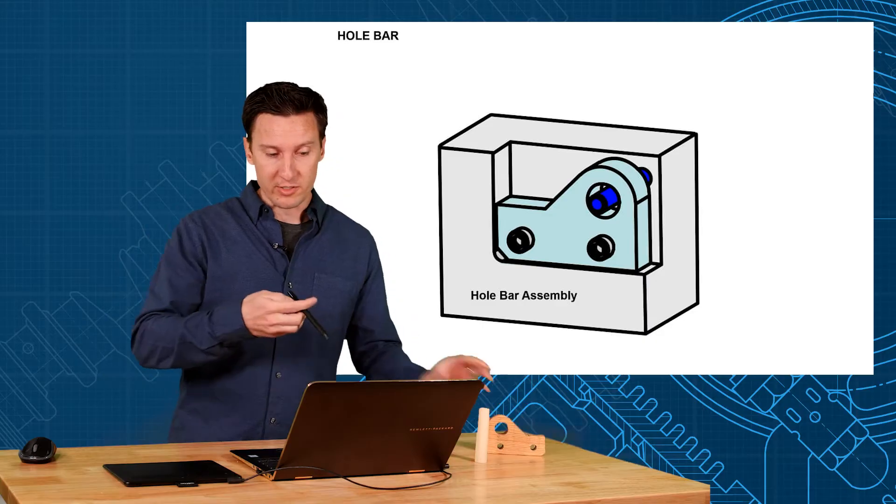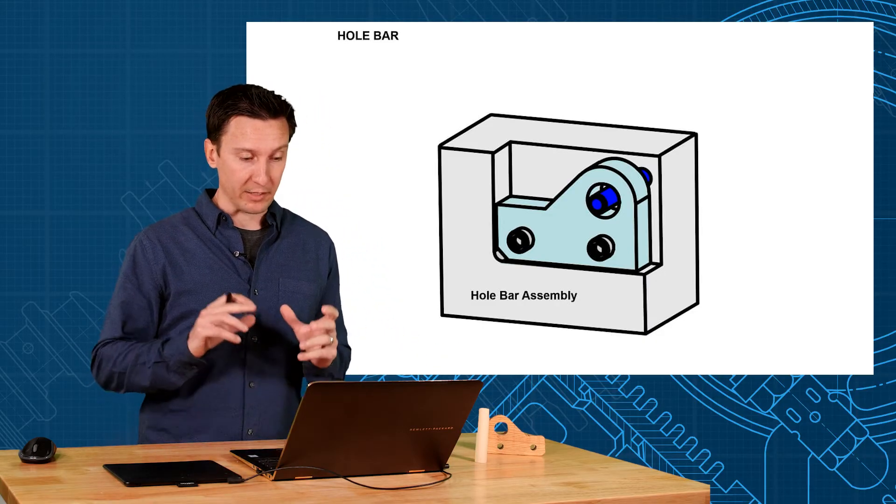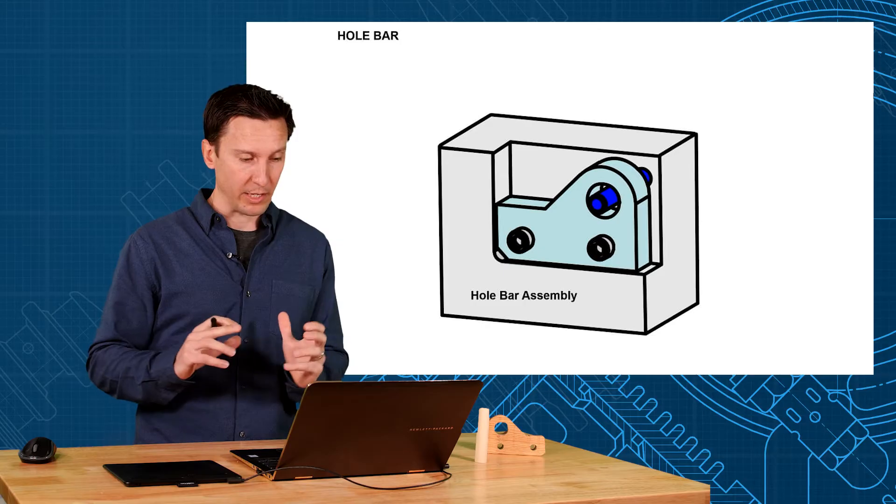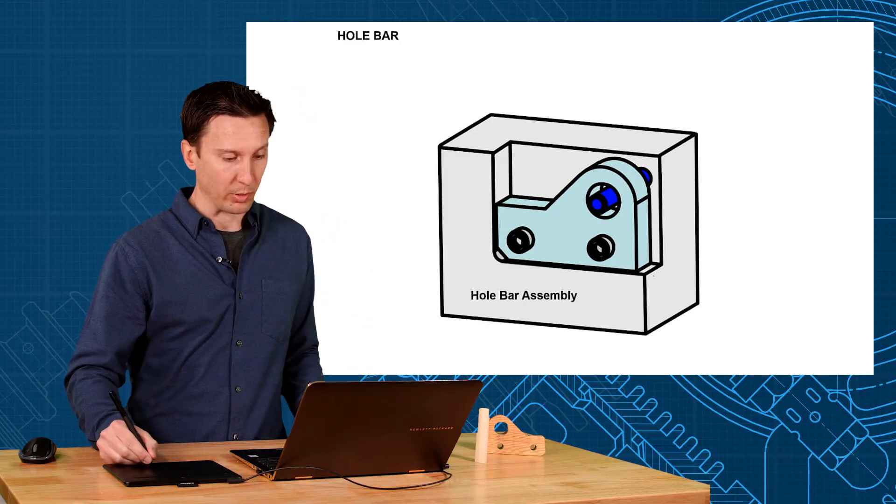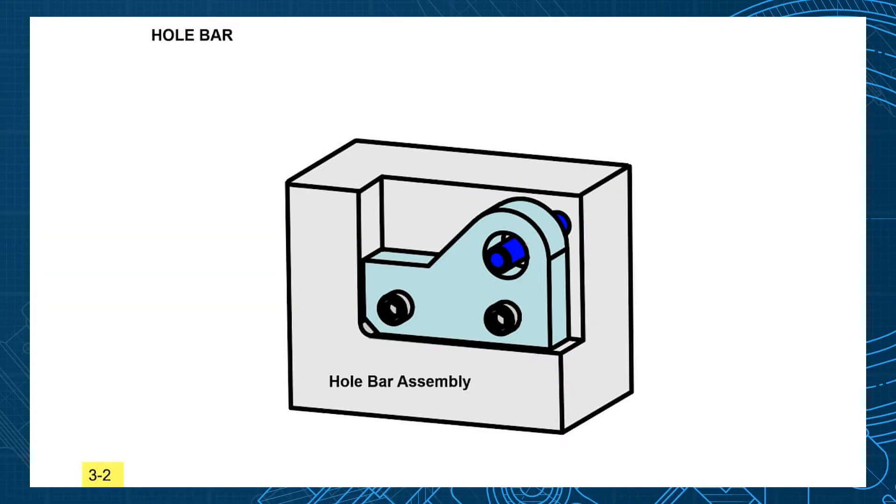So remember how the assembly looked for this piece? Pretty simple assembly. The part mounted up against the back face, it aligned to that bottom edge and aligned to that side edge, screwed in place with two screws, and this hole was designed to clear this blue pin.